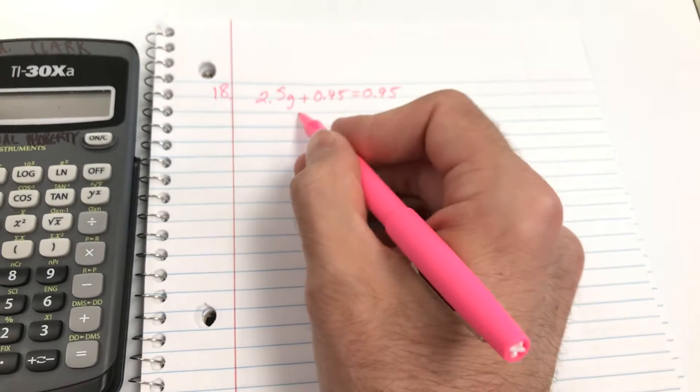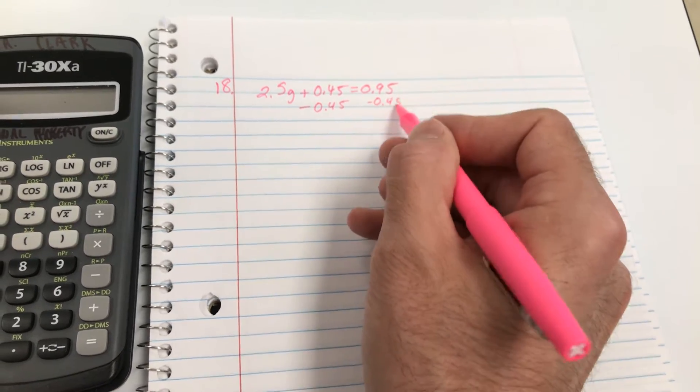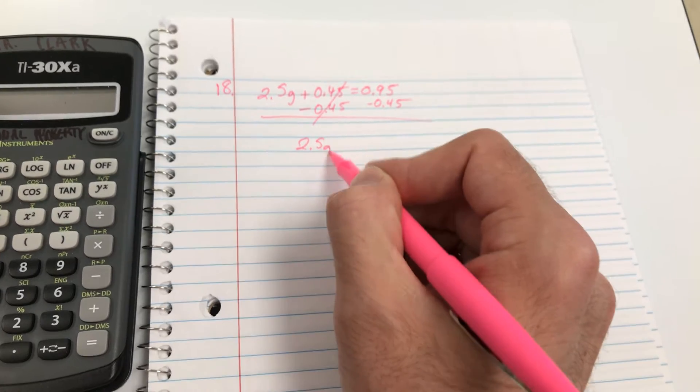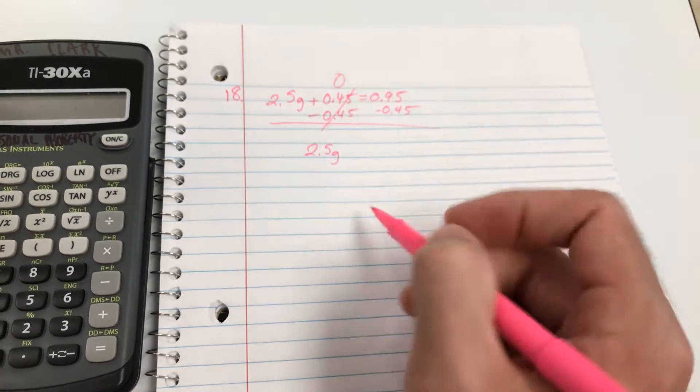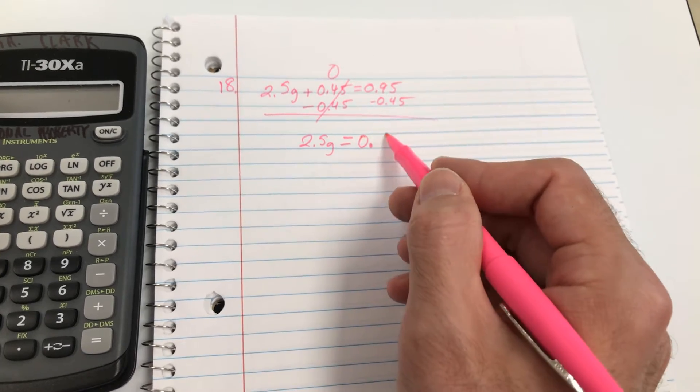We're going to subtract 0.45 on both sides. So that leaves us with 2.5g plus nothing else, because that's now 0, equals 0.5.